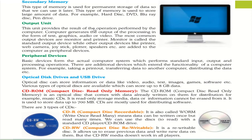Next is the output unit. The result of operations performed by the computer is displayed here. The computer generates output in a desirable manner — it could be in text form, graphics, audio, or video — displayed through the output unit. The standard output unit in our system is the monitor, and the standard input device is the keyboard. The most common output devices are monitor and printer. Monitor is called the standard output device, while other output devices include printer, webcam, joystick, plotters, and speakers.